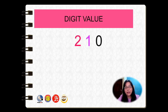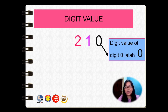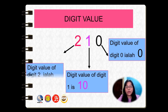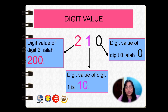Let's look at another example of digit value — two hundred and ten. What is the digit value of zero? Digit value of digit zero is still zero. What about the digit value of one? Digit value of one is ten. Digit value of two is two hundred.